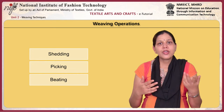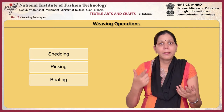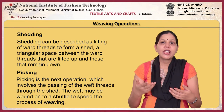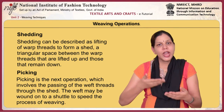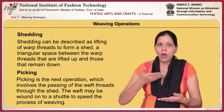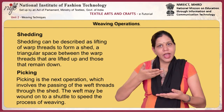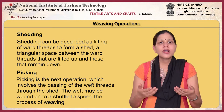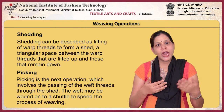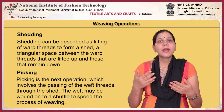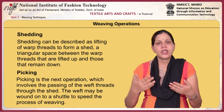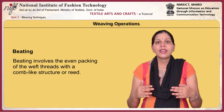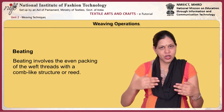Weaving involves three basic operations: shedding, picking and beating. Shedding can be described as a lifting of warp threads to form a shed — a triangular space between the warp threads that are lifted up and those that remain down. Picking is the next operation, which involves the passing of the weft threads through the shed. The weft may be wound onto a shuttle to speed the process of weaving. Finally, beating involves the even packing of the weft threads with a comb-like structure or reed.